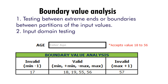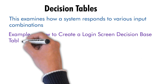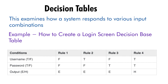Next is decision table testing. Decision table testing is a software testing technique that examines how a system responds to various input combinations. The different input combinations and the system's behavior are laid out in a table. Let's consider an example: a login screen. We have two text boxes — username and password. By making combinations of these two, we can write our test cases. In this table, conditions are written on the left side.